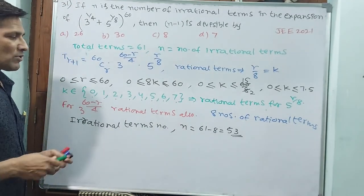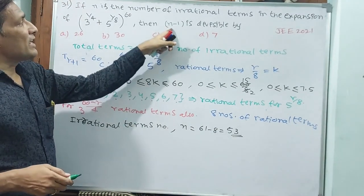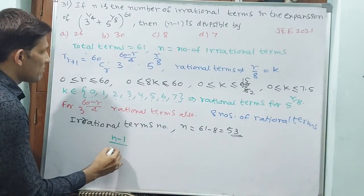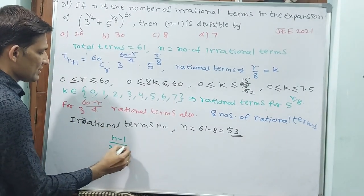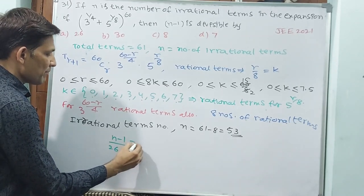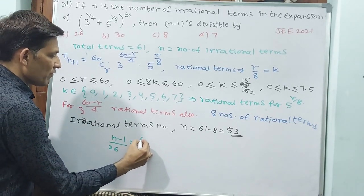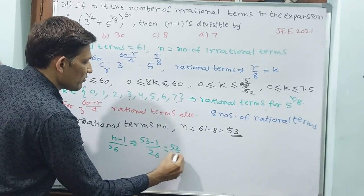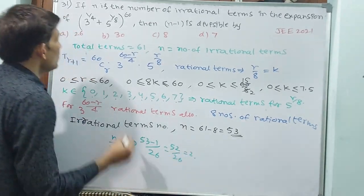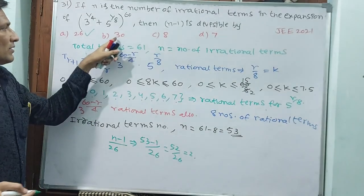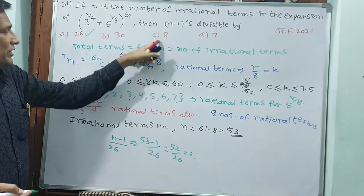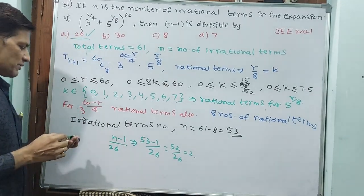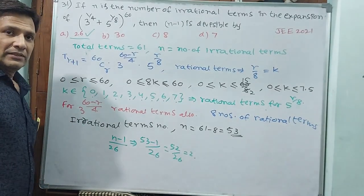Now come back to what they are asking: n minus 1 is divisible by which number? n minus 1 divided — n = 53, so 53 minus 1 = 52 divided. Is 52 divisible by 26? Yes, this is divisible. Is 30 divisible? No. Is 8 divisible? No. Is 7 divisible? No. That means only 26 is divisible by n minus 1. This is the answer. Let us go to the next question.